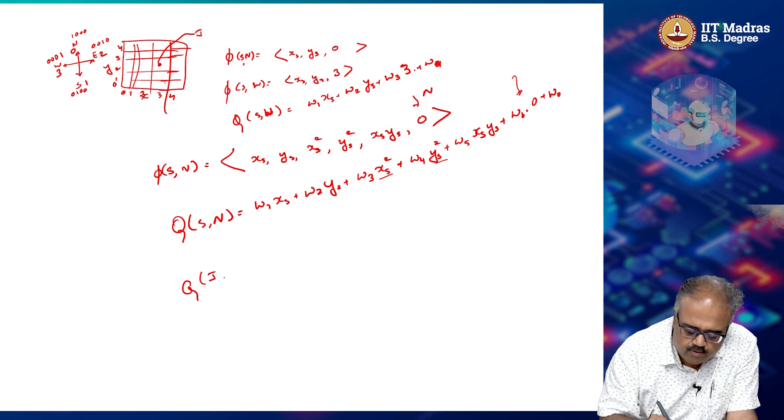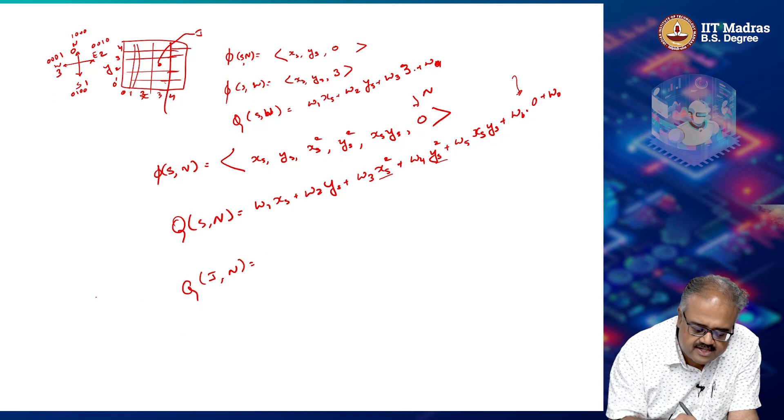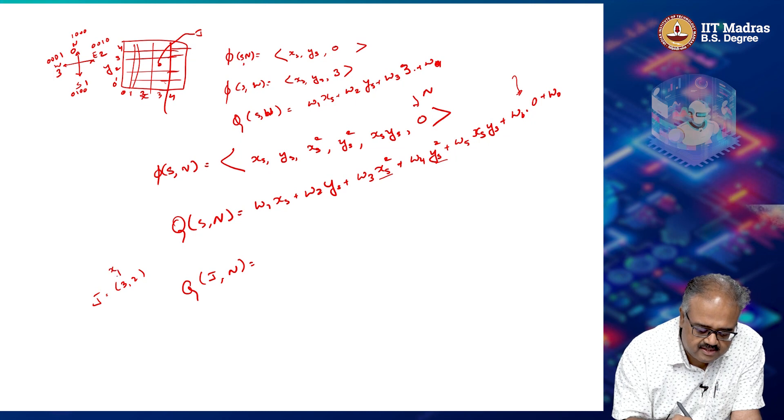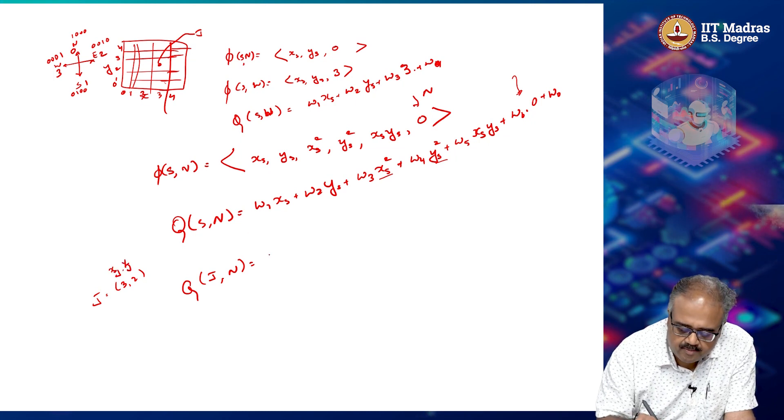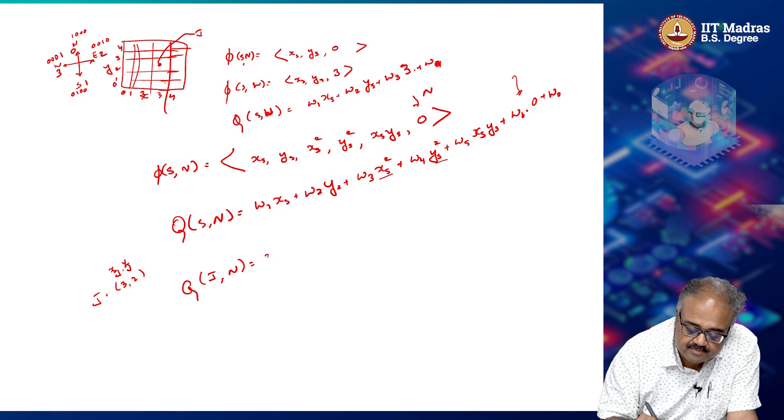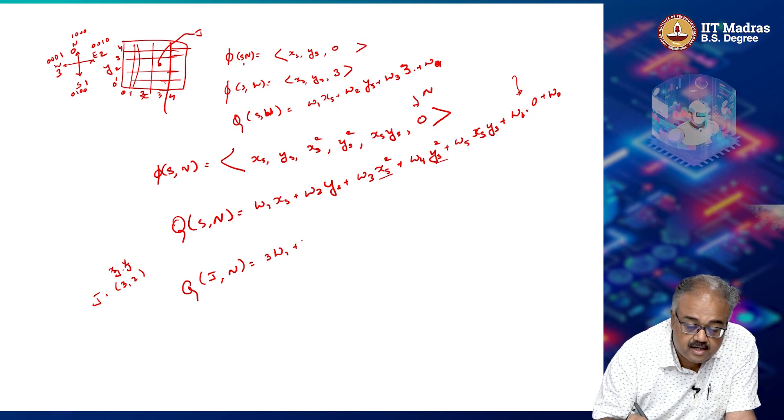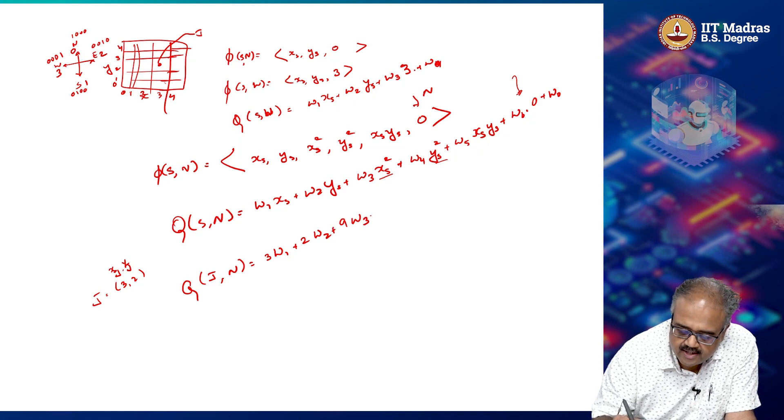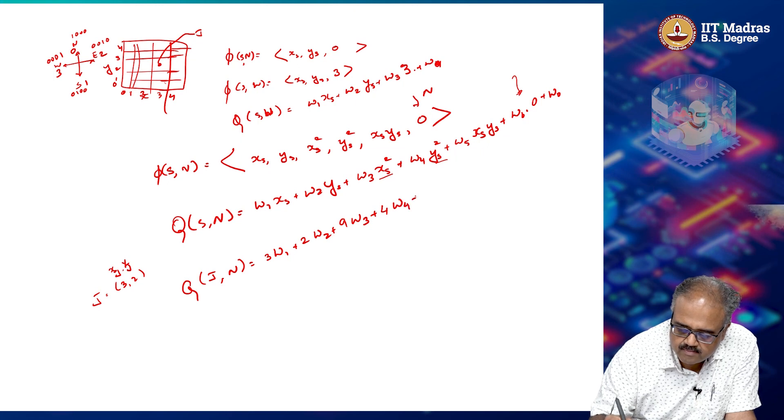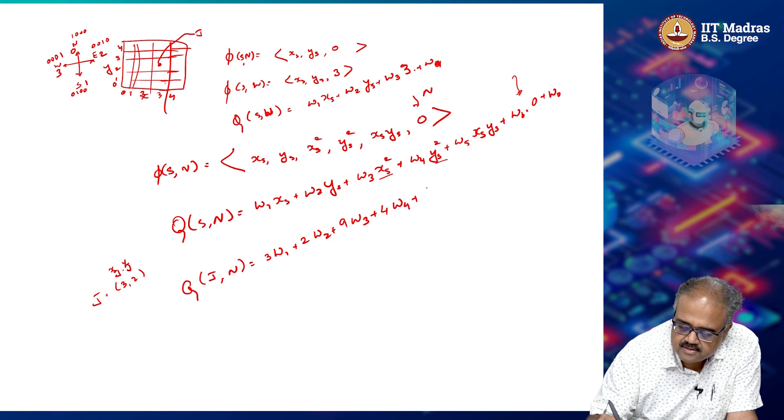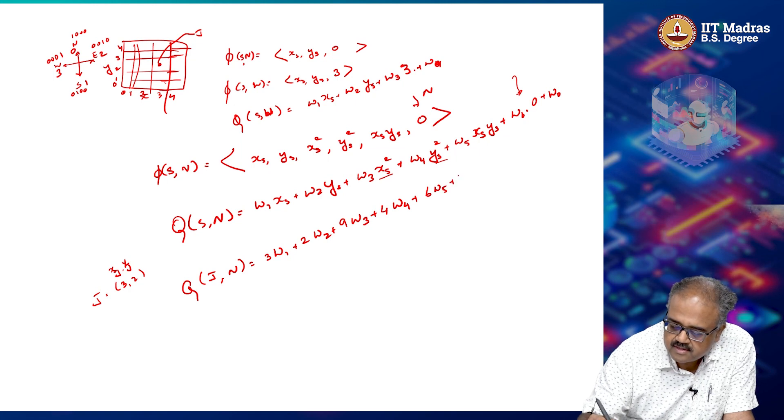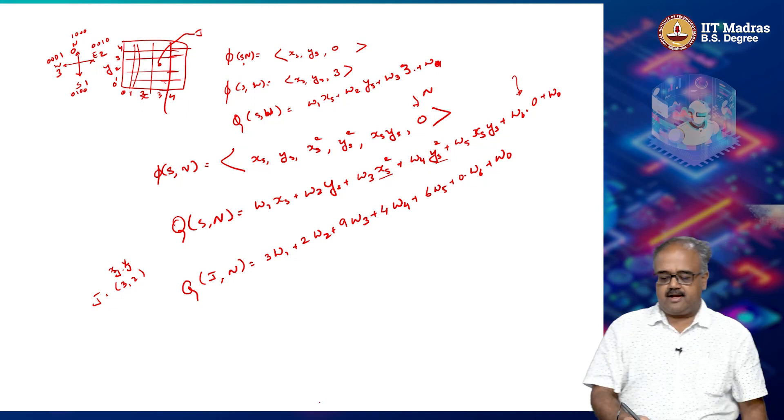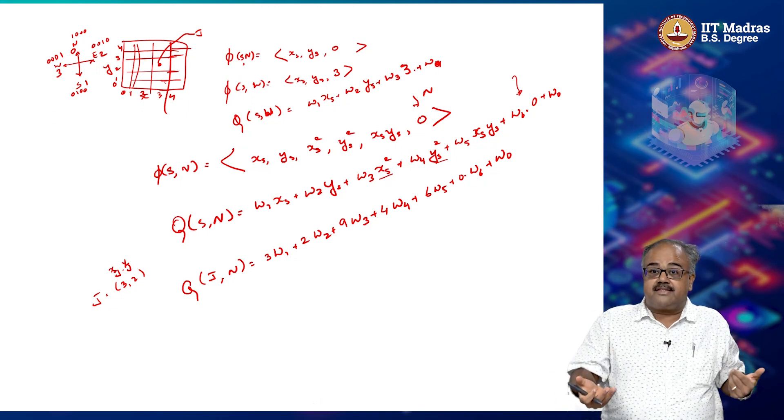So now I am going to look at q of j comma n. So now remember j is actually equal to 3 comma 2. So this is x j and this is y j. So computing with that, this is basically become 3 times w 1 plus 2 times w 2 plus 9 times w 3 plus 4 times w 4 plus 6 times w 5 plus 0 times w 6 plus w naught.